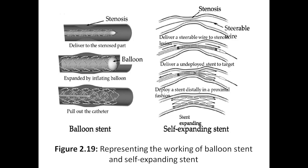Once the deploying is done, the particular artery will be expanded properly. Now the blocked part is opened up. Once it is opened up, the stent will hold and give mechanical strength, so the blood flow will be proper. That is why it is called a self-expanding stent. From here it started just as a wire, then the undeployed stent came, and then the stent deploys — opens up and expands the capillary — so there is no blockage.